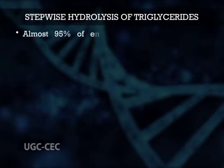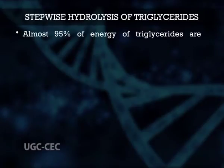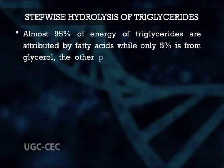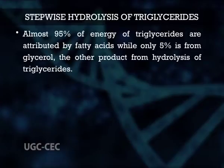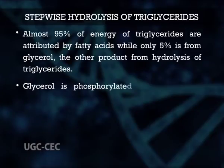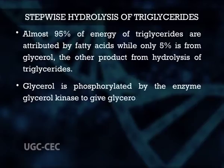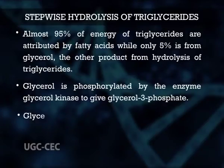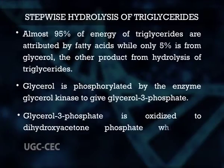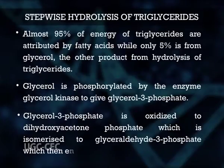Almost 95% of the energy of triglycerides is attributed to fatty acids while only 5% comes from glycerol, the other product of triglyceride hydrolysis. Glycerol is phosphorylated by the enzyme glycerol kinase to yield glycerol 3-phosphate, which is oxidized to dihydroxyacetone phosphate, then isomerized to glyceraldehyde 3-phosphate, which enters glycolysis.